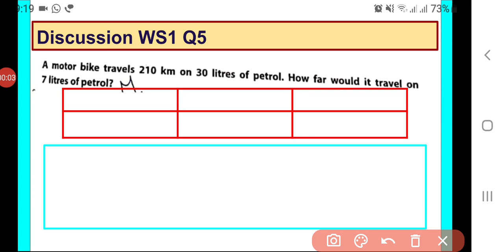Hello dear students, let us discuss this question. A motorbike travels 210 kilometers on 30 liters of petrol. How far would it travel on 7 liters of petrol? In this question, there are two quantities which are given: distance traveled and petrol in liters.